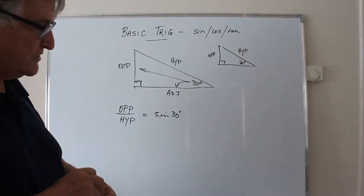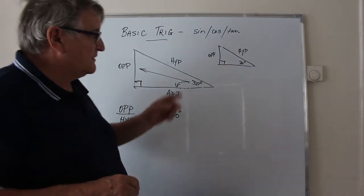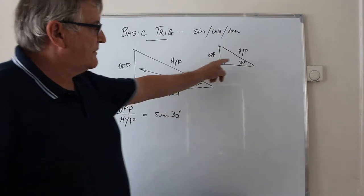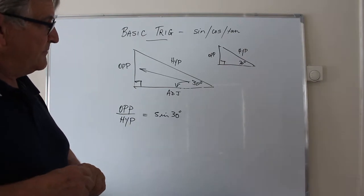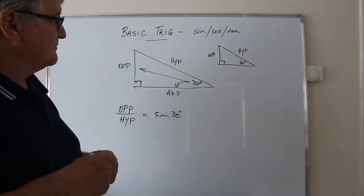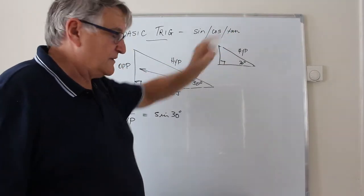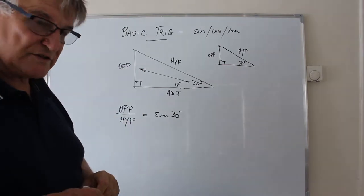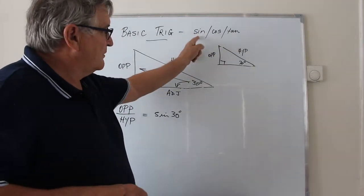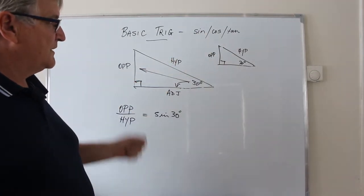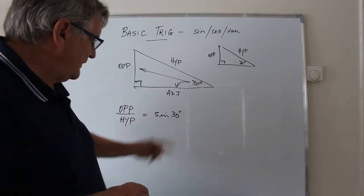Any calculator will give you the value of sine, cosine, and tangent of any angle between 0 and 360 degrees. Make sure your calculator is in degree mode, because there are other ways of measuring angles. You might have trouble finding the tangent of 180 degrees and the tangent of 270 degrees because they don't exist — they're infinitely large. Every other value for sine and cosine of any angle will be a number between negative 1 and positive 1.